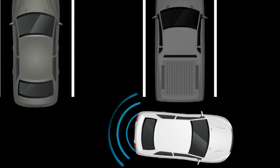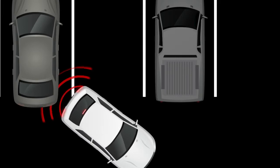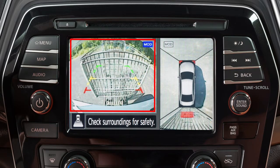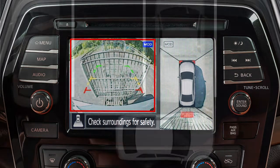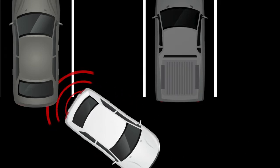If a risk of a collision with an obstacle is detected when your vehicle is backing up, the RAB system warning indicator will flash in the vehicle information display. A red frame will appear in the center display, if so equipped, and the system will chime three times.